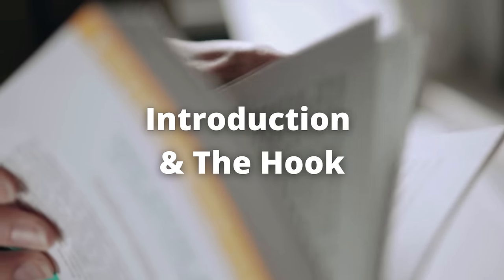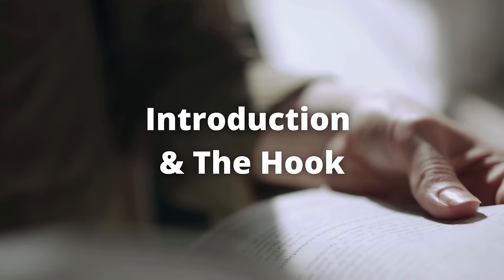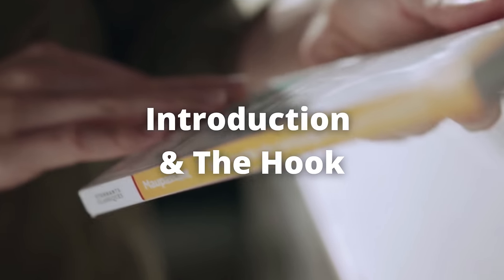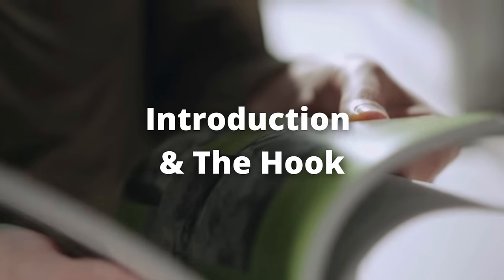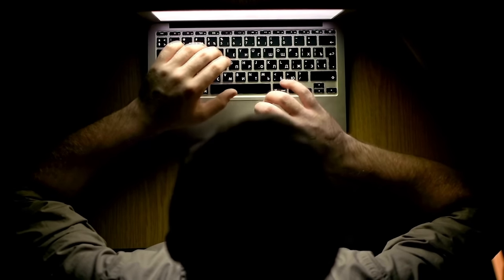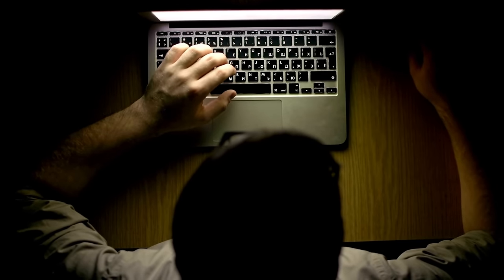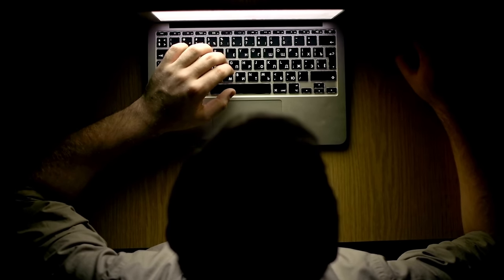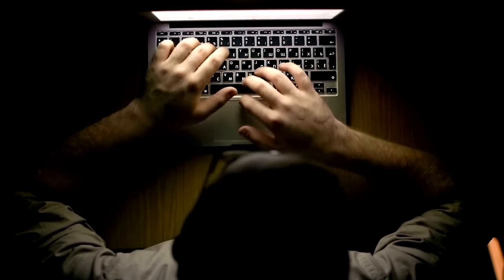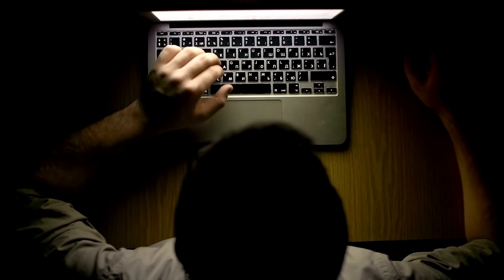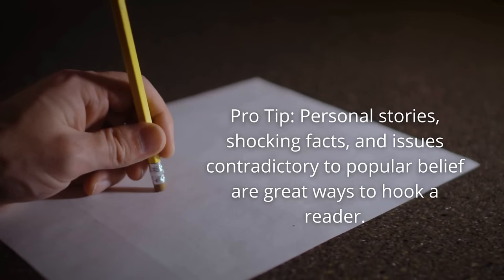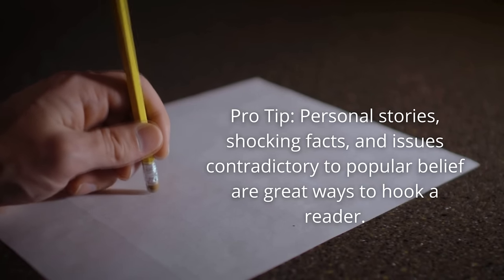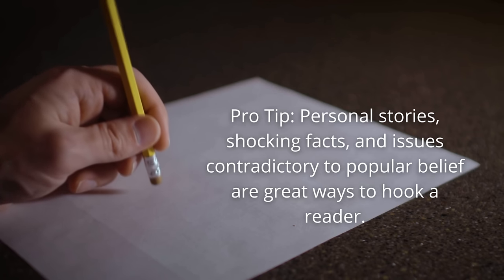Next, we'll move into introduction. The hook. In writing your hook, you might want to consider writing a compelling personal story based on the concept, topic, or idea that you want to relate to your audience. This can be done by writing a shocking fact based on your overall concept. You can then follow this up with an uncommon belief based on the concept, topic, or idea. And then you might want to also consider using an emotional or compelling statistic that is relevant, like a famous line from a book that you've read. Pro tip: Personal stories, shocking facts, and options contradictory to popular belief are great ways to hook a reader and captivate someone's attention.